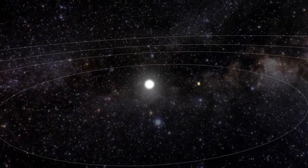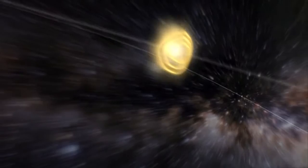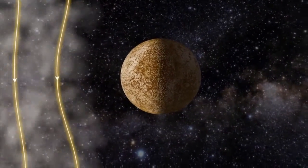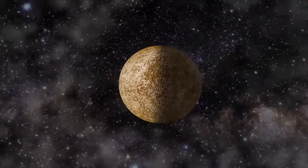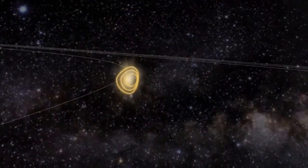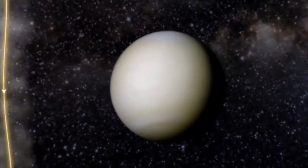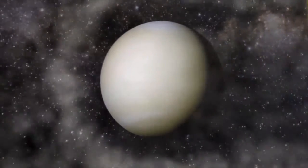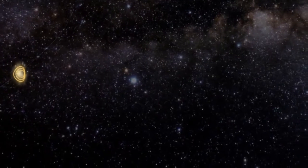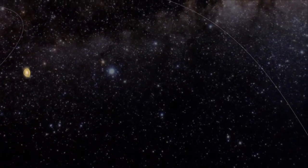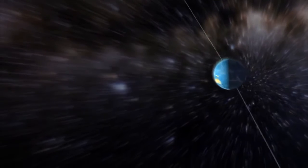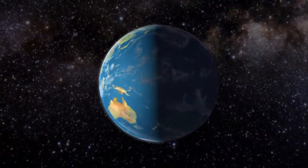The solar storm can reach speeds over 8 million kilometers an hour. After six hours, it blows past the planet Mercury. After 12 hours, the planet Venus. And after 18 hours, the solar storm reaches Earth.